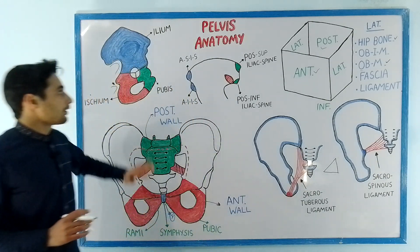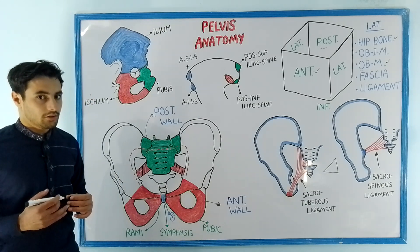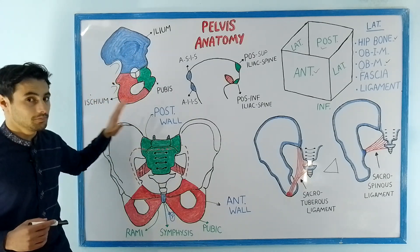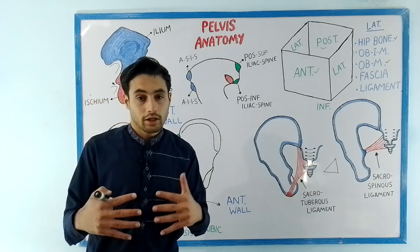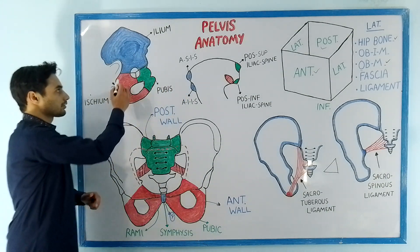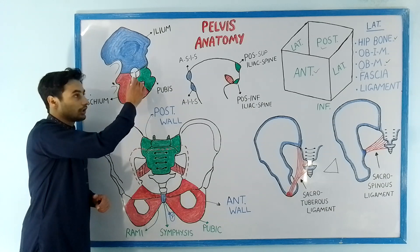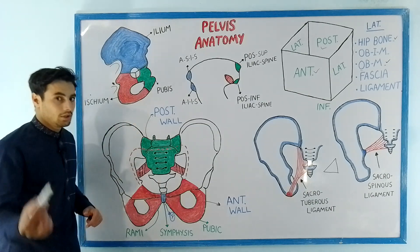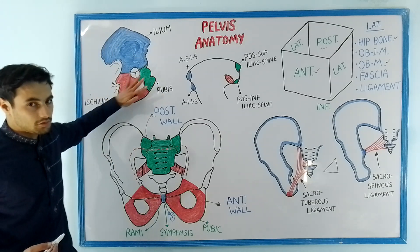Have a look at the hip bone, or the os coxae. In children, the hip bone is made up of three bones: ilium, ischium, and the pubis. These three bones are joined with one another by a type of cartilage known as the triradiate cartilage. This cartilage joins the three bones together at the acetabulum or the acetabular depression, which forms the hip joint with the head of the femur.